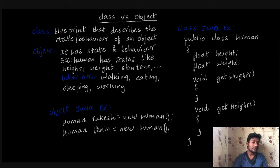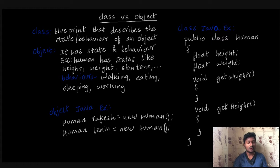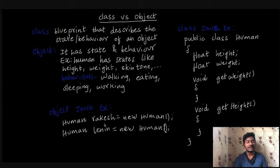There are many ways to create an object. One of the regularly used methods: class name, then object name, equal to new class name, open and close bracket, semicolon. For example: Human Lenin = new Human(); — Lenin is the object name. You can create a second object similarly. So from one class, you can create many objects.